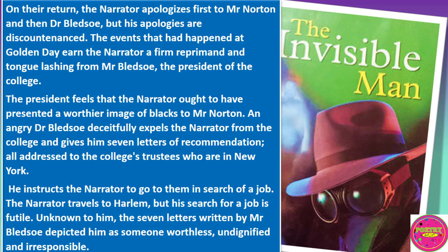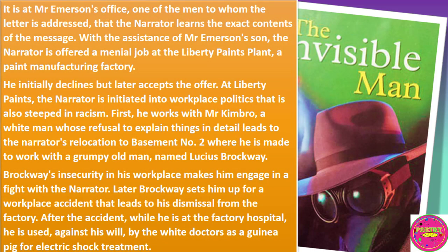On their return, the narrator apologizes first to Mr. Norton and then to Mr. Bledsoe, but his apologies are discountenanced. The events that had happened at Golden Day earned the narrator a firm reprimand and tongue-lashing from Mr. Bledsoe, the president of the college. The president feels that the narrator should have presented a better image of blacks to Mr. Norton. An angry Bledsoe deceitfully expels the narrator from the college and gives him seven letters of recommendation, all addressed to the college's trustees who are in New York. He instructs the narrator to go to them in search of a job. The narrator travels to Harlem, but his search for a job is futile. Unknown to him, the seven letters written by Mr. Bledsoe depicted him as someone worthless and irresponsible. It is through Mr. Emerson's son that the narrator learns the exact content of the letters.